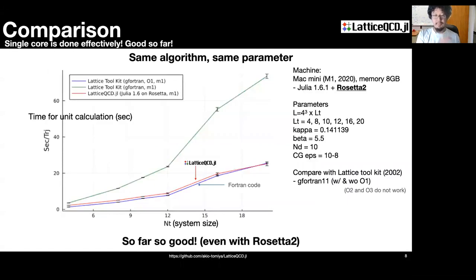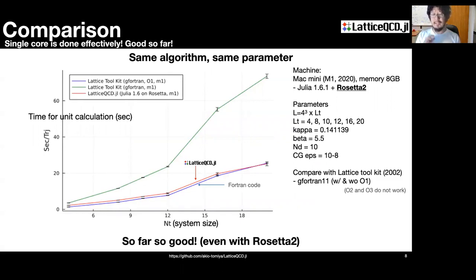This is a comparison between our code and a Fortran code. Detail parameters are shown on the right. As you can see, it is well-scaled and achieves compatible speed with the Fortran code, even with Rosetta 2. This result is encouraging.